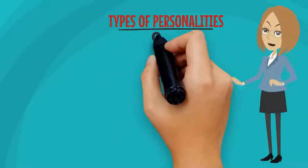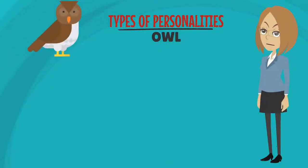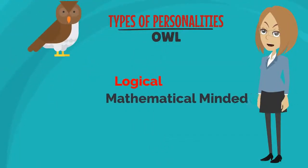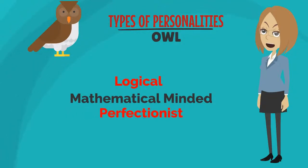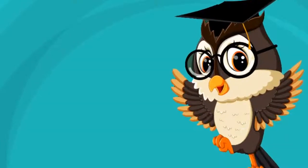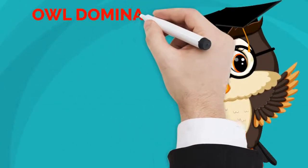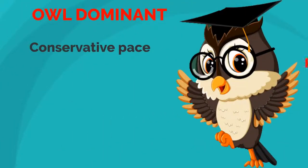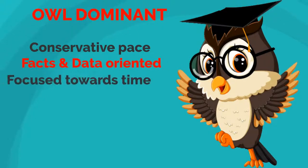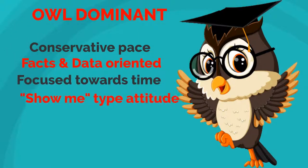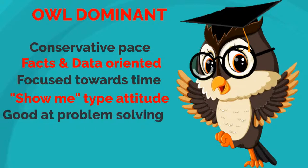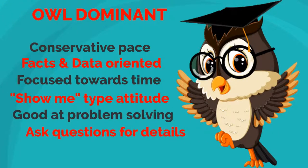Owl personality traits: logical, mathematical-minded, methodical, and sometimes seen as a perfectionist. They can be slow to make decisions and inflexible if rules and logic say otherwise. Owls are not big risk-takers but love detail — conservative-paced, data-oriented, focused, with a 'show me' attitude, great at problem-solving and asking questions.